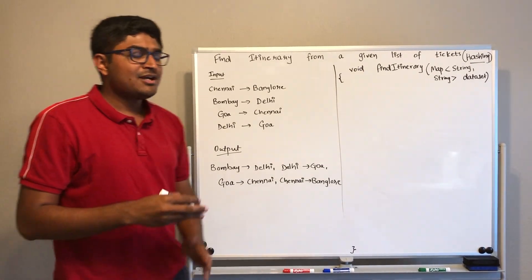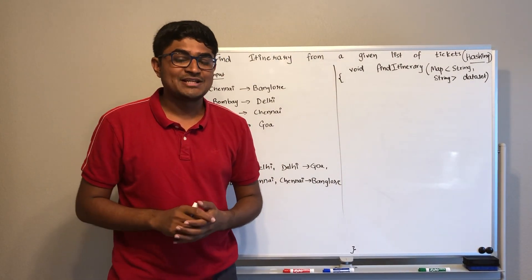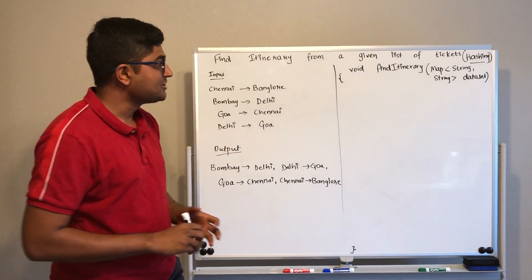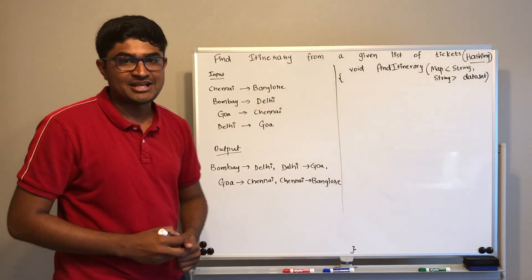You can always build a graph out of it and do a topological sorting, but if you want to avoid the complexity of building a graph, you can use the method of hashing and still solve this problem in linear time complexity.